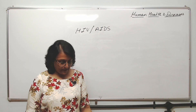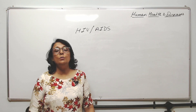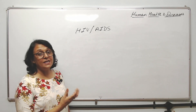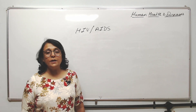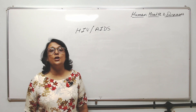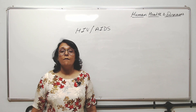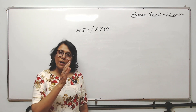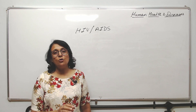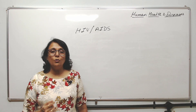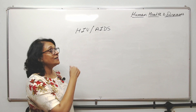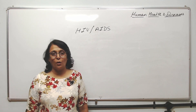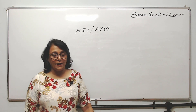HIV stands for Human Immunodeficiency Virus, and AIDS is a condition called Acquired Immunodeficiency Syndrome. The word 'syndrome' is used whenever multiple things are affected, while 'disease' is used when only one part is affected — like jaundice, cholera, or pneumonia. AIDS is a syndrome because multiple systems and organs of the body get affected.